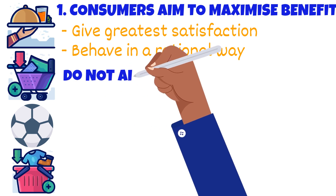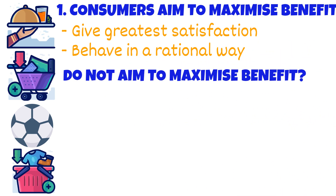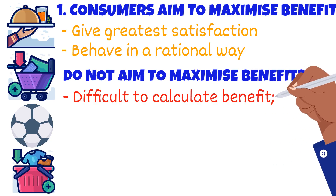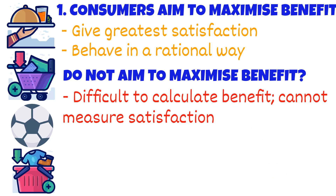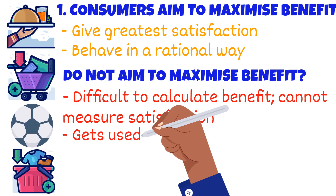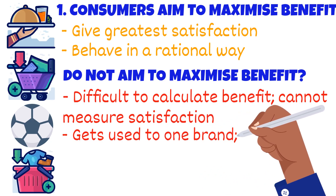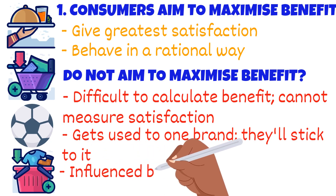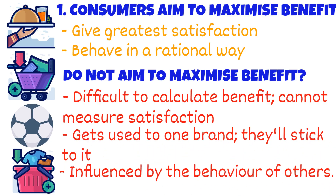But there are some times that consumers do not aim to maximize benefit. There are three possible reasons why. Sometimes the consumer will find it difficult to calculate the benefit since you cannot measure satisfaction — for example, how can James know that getting food will give him more satisfaction than going on a shopping spree? If a consumer gets used to buying a particular brand, even if another brand provides better value, they will stick to their brand. The final reason is that consumers are influenced by the behavior of others — for example, James might go to McDonald's not because he likes it, but because his family and friends go there.